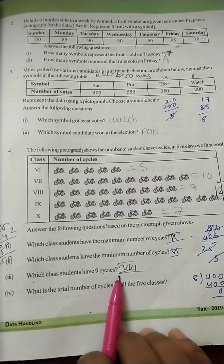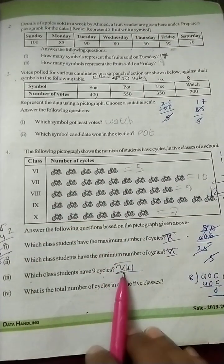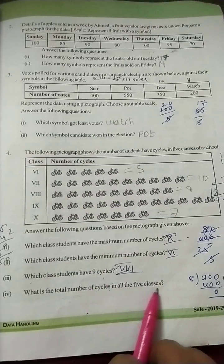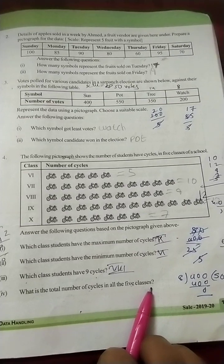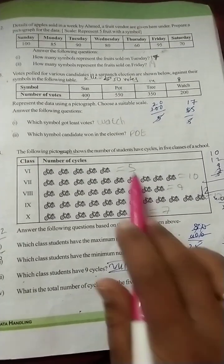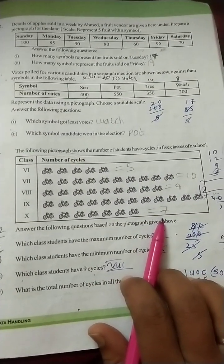Which class students have the minimum number of cycles? Minimum means less number of cycles when compared to other classes. Which class students having less number of cycles? Sixth class students. Five only. Which class students have nine cycles? Ninth cycles. Eighth class students. So write eighth class.